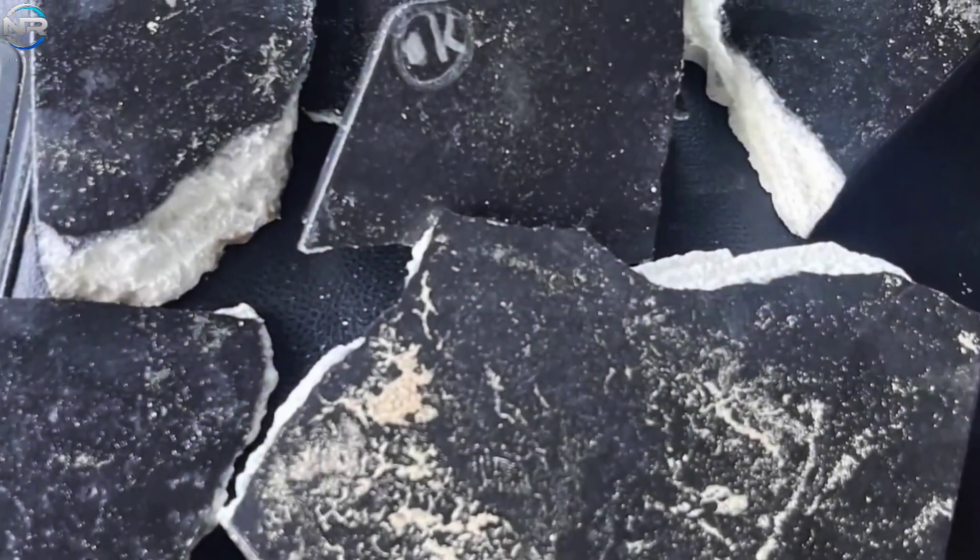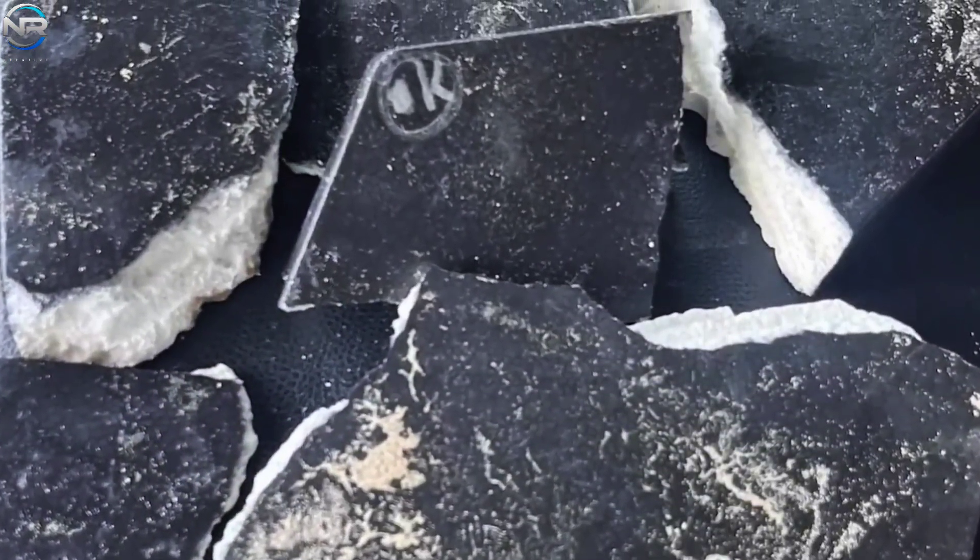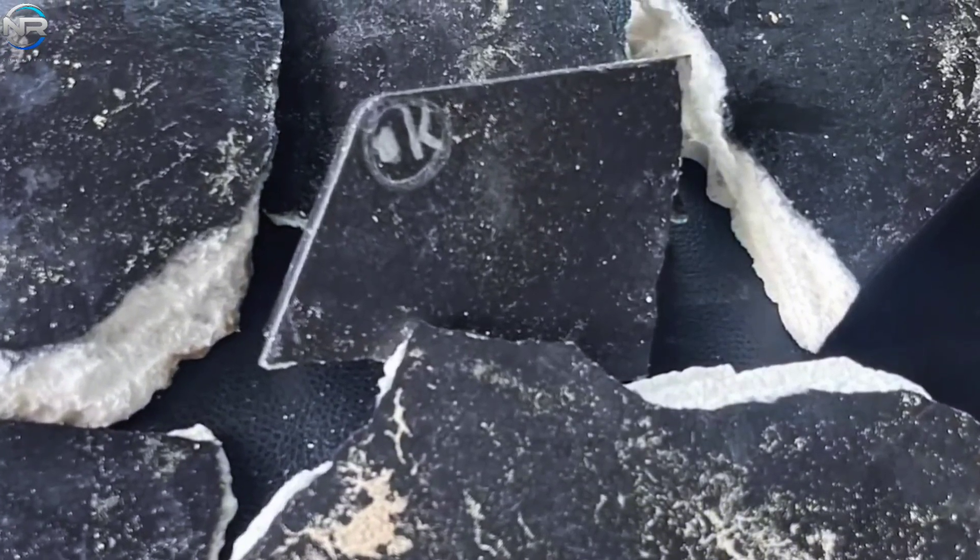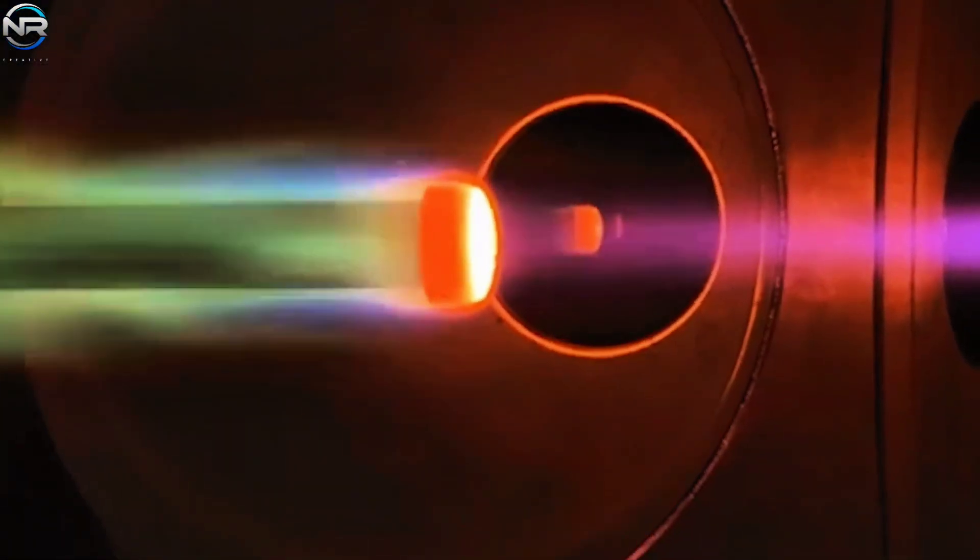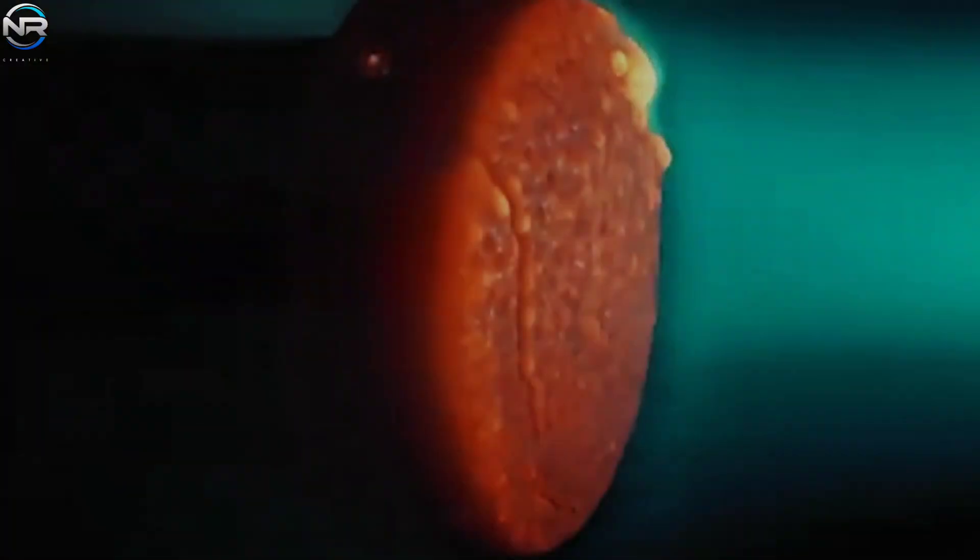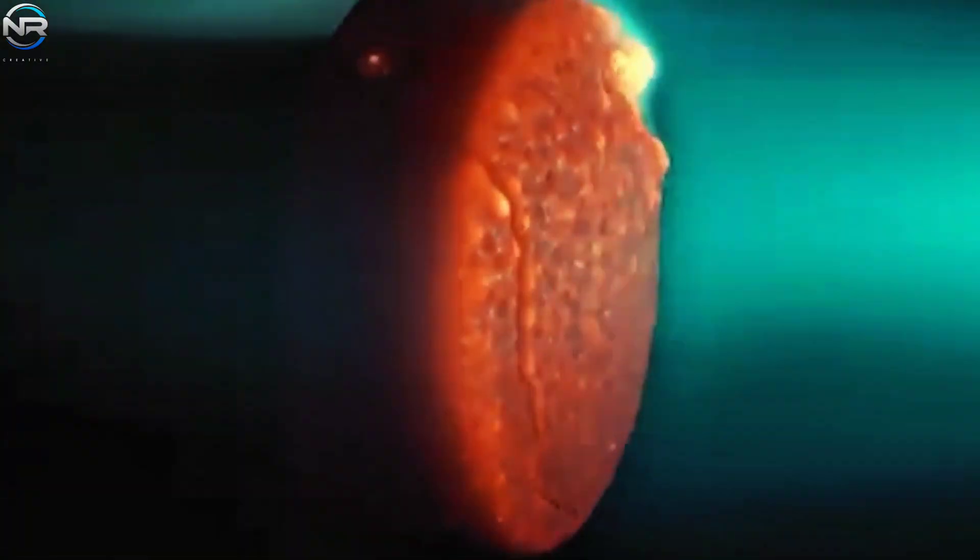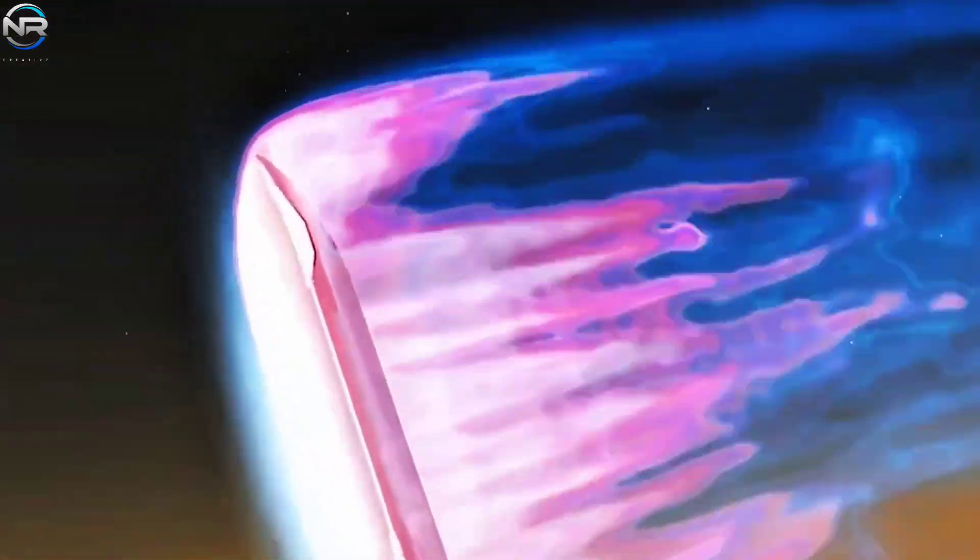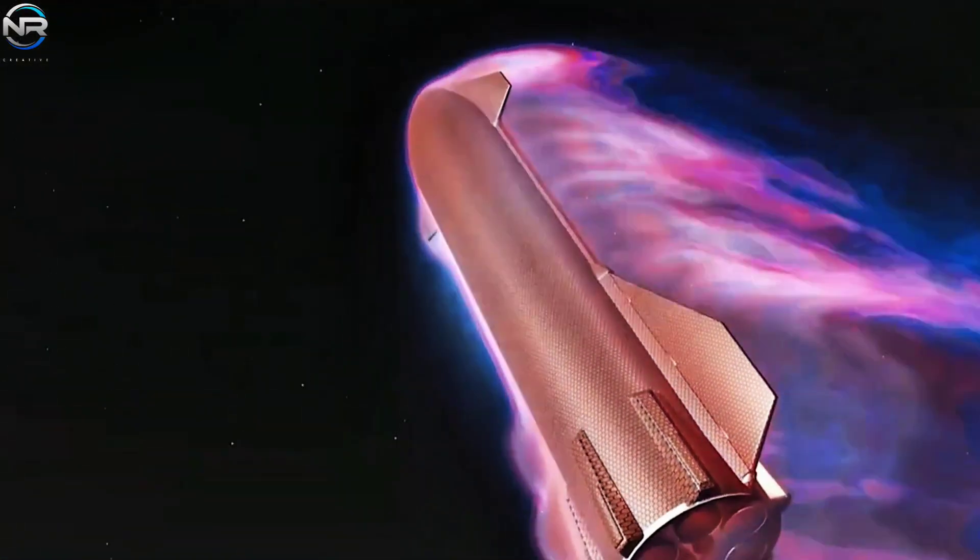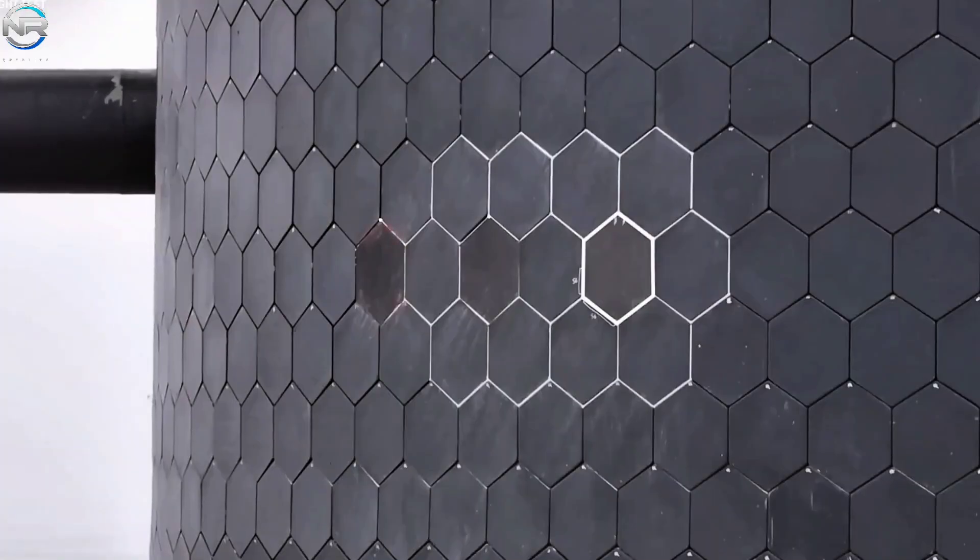One problem with current metal tiles is that they are difficult to see. Ceramic tiles often crack and show obvious signs of damage. Metal tiles, on the other hand, can bend or weaken without visible damage. This makes early detection of problems difficult. Worse yet, if metal tiles melt or break, it can cause problems for surrounding systems because the metal can conduct electricity and spread the problem. Addressing these risks is crucial before metal heat shields can be widely used.